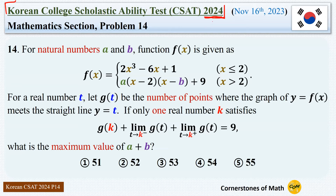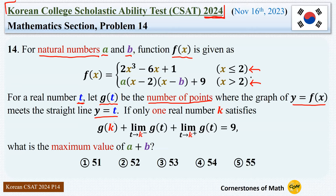For natural numbers a and b, function f(x) is given as 2x cubed minus 6x plus 1 when x is less than or equal to 2, and a times (x minus 2)(x minus b) plus 9 when x is greater than 2. For a real number t, let g(t) be the number of points where the graph of y equals f(x) meets the straight line y equals t. If only one real number k satisfies g(k) plus the limit of g(t) as t approaches k from the left plus the limit of g(t) as t approaches k from the right equals 9, what is the maximum value of a plus b?